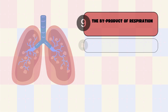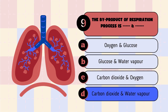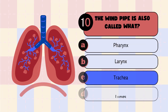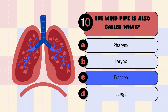The answer to question 9 is option D, carbon dioxide and water vapor — the byproduct or waste product of respiration is carbon dioxide and water vapor. Finally, the answer to question 10 is option C — the trachea is also called the windpipe.